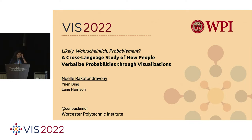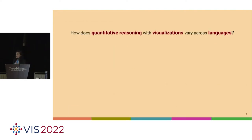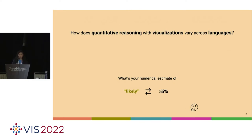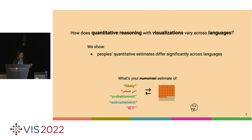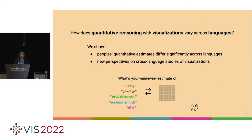Thanks for the introduction. In this talk, I will tell you about our exploration of how quantitative reasoning with visualization can vary across languages. In the paper, we show that if we gave people estimation tasks, they would normally use numbers, but we replace the numbers with visuals and repeat that across languages. We then learn that people's quantitative estimates differ across those languages, and we think this could open new perspectives on cross-language study of visualizations.